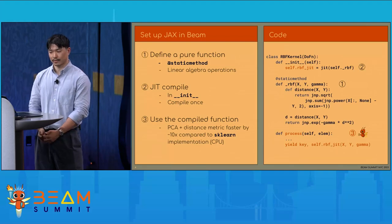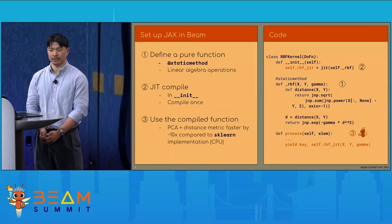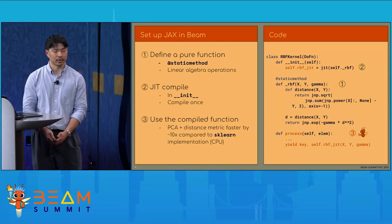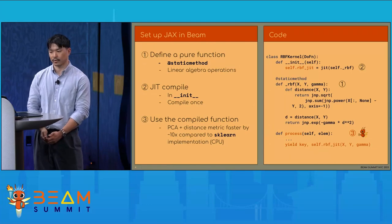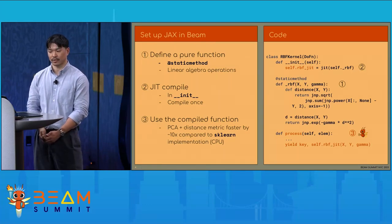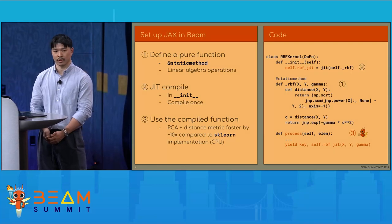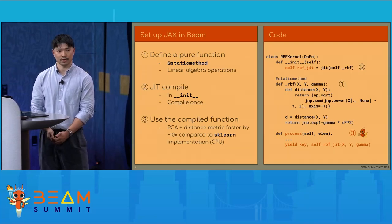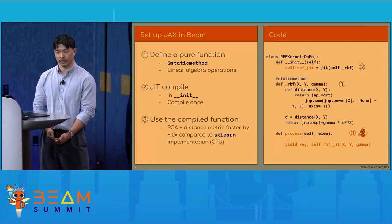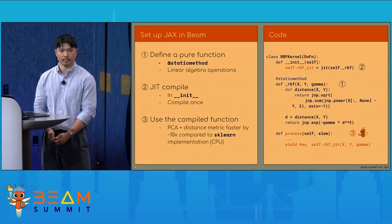In our use case with PCA projection and then computing a distance metric, we find a 5 to 10x speed up compared to doing it with scikit-learn — and that's on CPU alone. The really great thing about JAX is that it's very trivial to dispatch this computation to run on the GPU, which gives an even greater speed up.